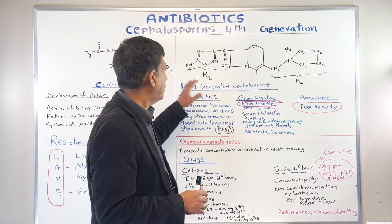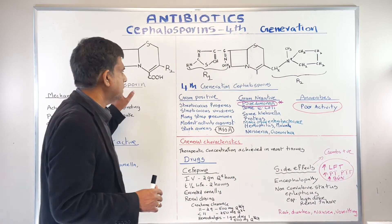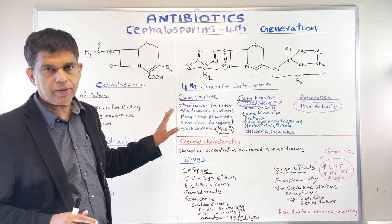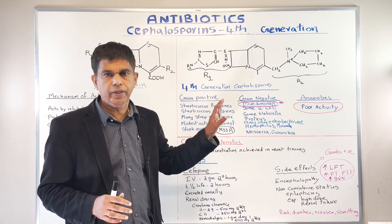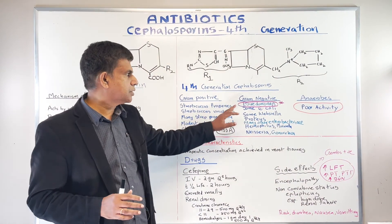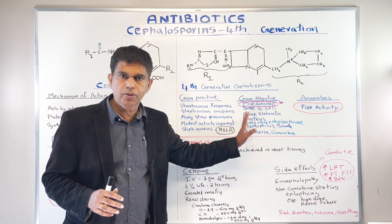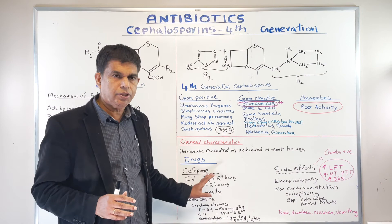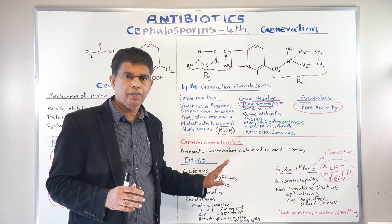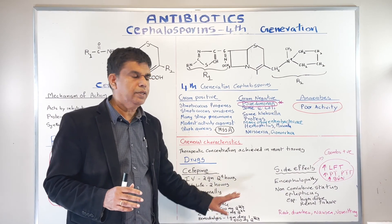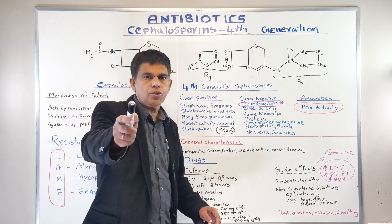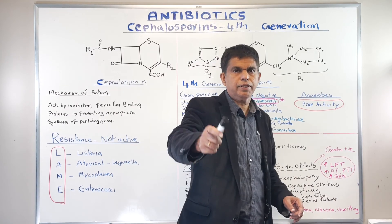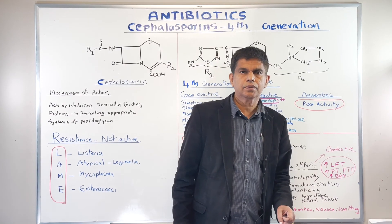So remember all of these things — this is the fourth-generation cephalosporin. The main drug to know is Cefepime, which covers Pseudomonas and is renally dosed. Review the side effects. Thank you so much for watching. We'll be back with another presentation soon. Bye.